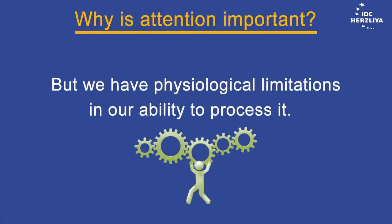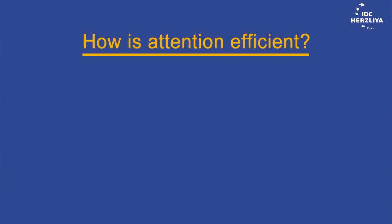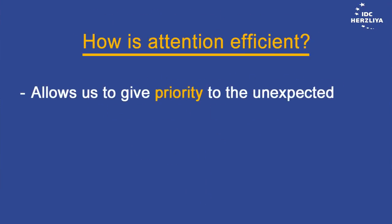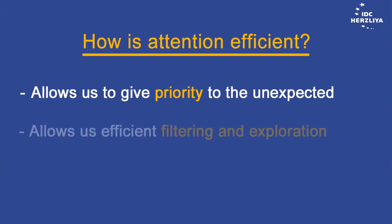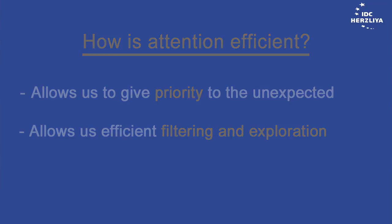Why is attention important? We need attention to effectively deal with huge amounts of sensory information, but we have physiological limitations in our ability to process it. Attention is efficient because it allows us to give priority to the unexpected, the new, and the important, and it allows efficient filtering and exploration of information.